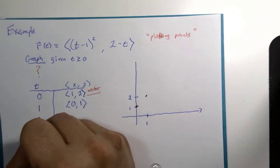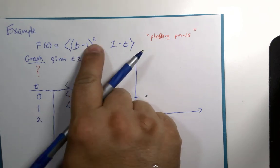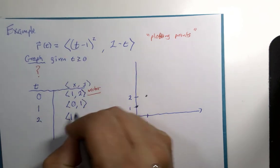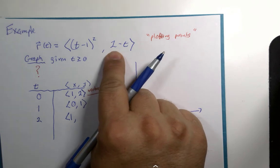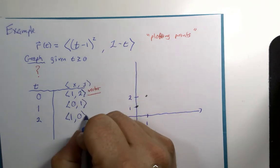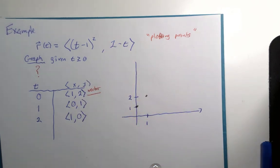If t is two, two minus one is one, one squared is still one. Two minus two is zero. That point would be at (1, 0).